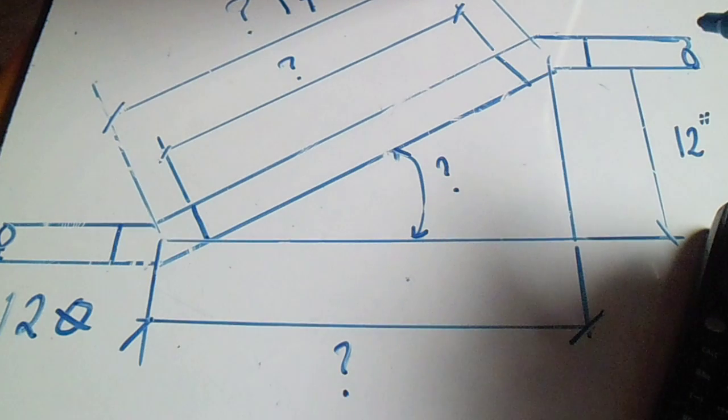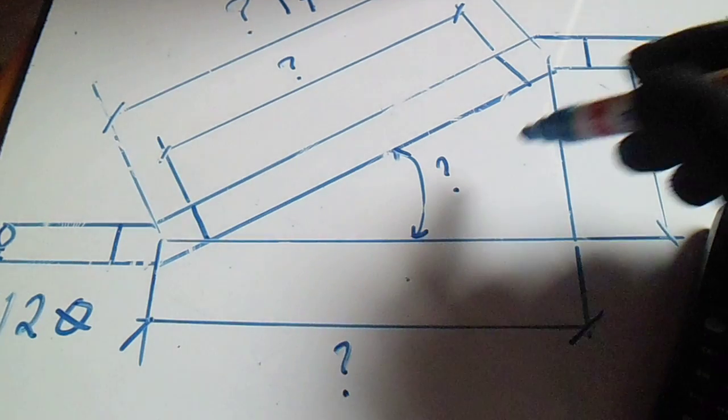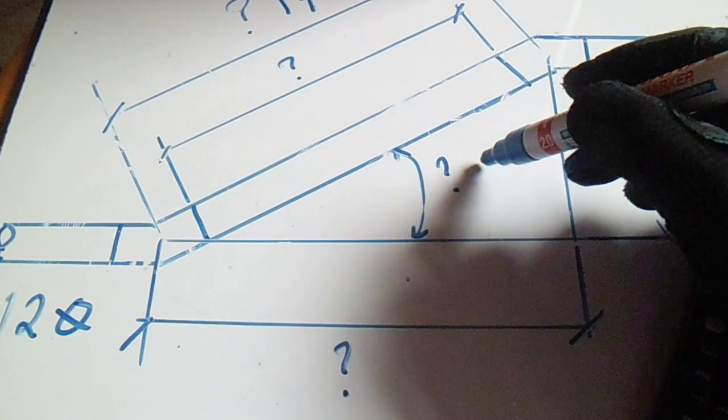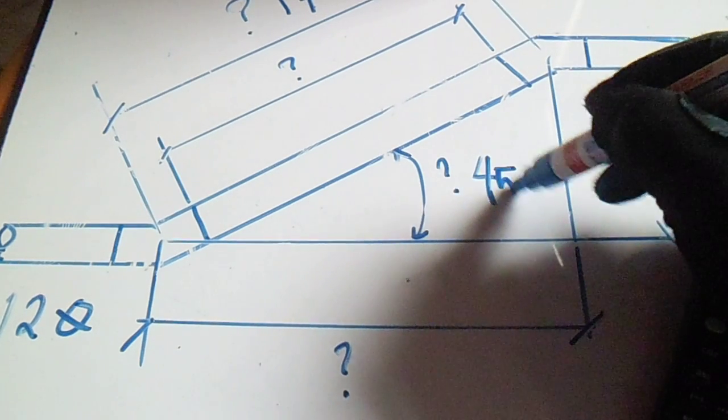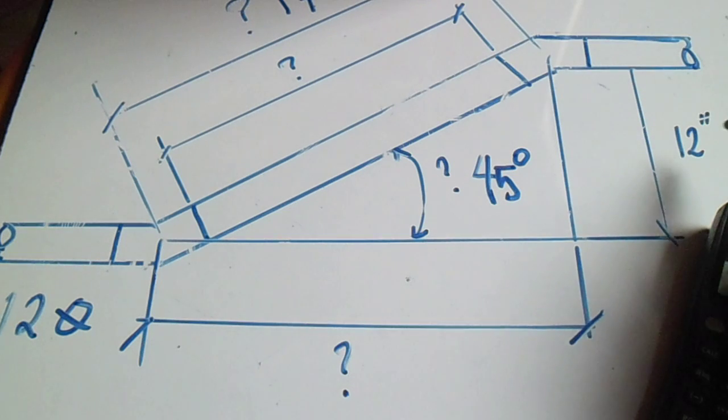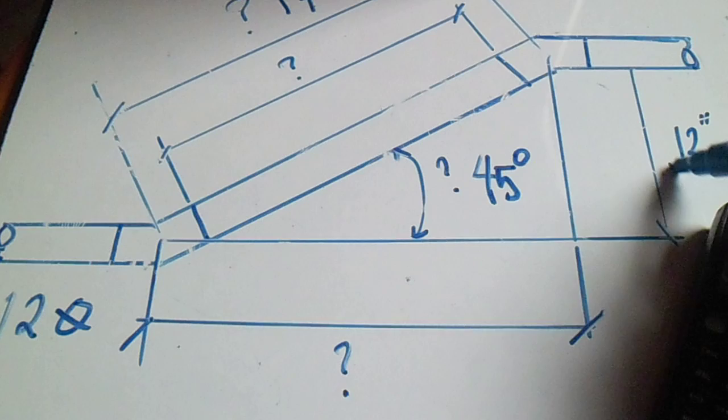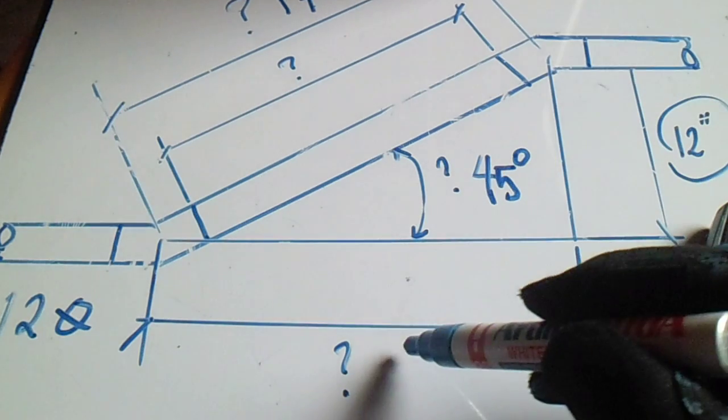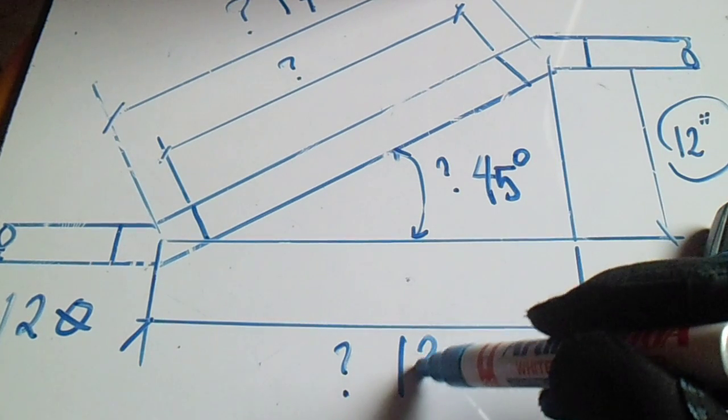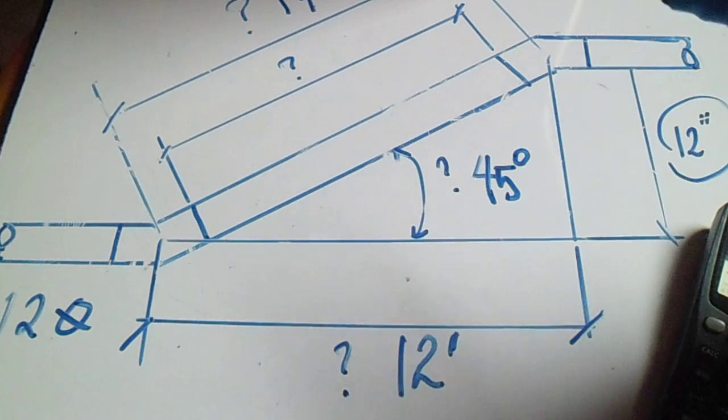We are using 1.414, so this is 45 degrees. And also we have a set of 12. Also our run is 12 because we have 45.